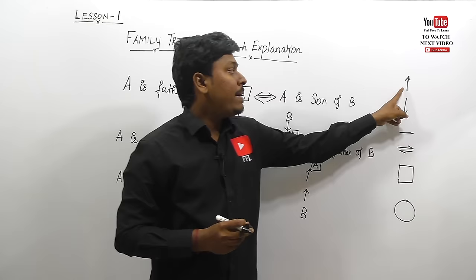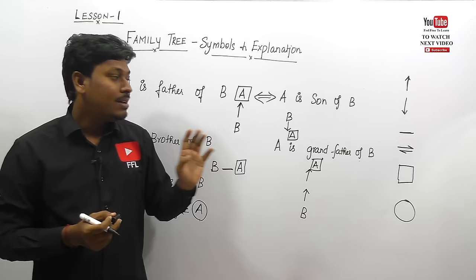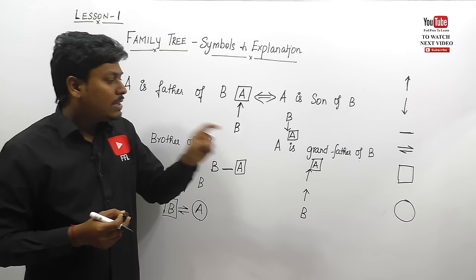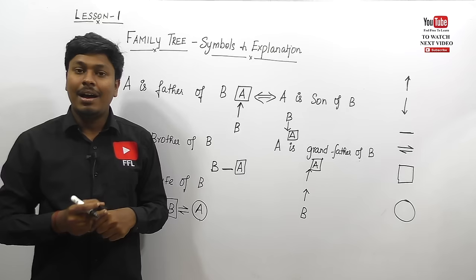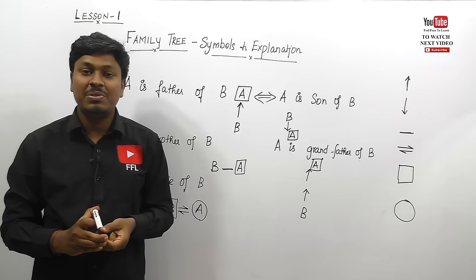To summarize the basic symbols: up arrow denotes father, mother, and uncle; down arrow denotes son or daughter; a small line indicates brother-sister relation; the special symbol denotes husband and wife; a box is for a male person; and a circle is for a female person. If you know this lesson properly, I guarantee you can crack questions in your exams.